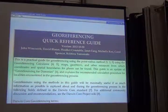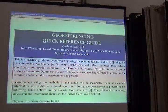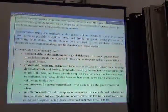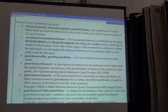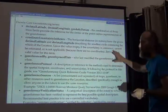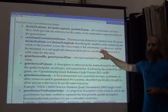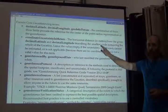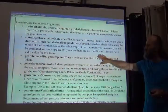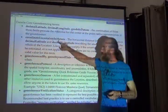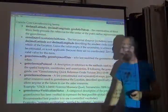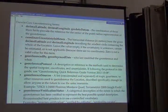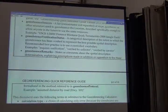One of the nice things about the guide, aside from being short, is that it defines all the terms you need to know right at the beginning of the document. We've been through all of these already — you can see they're all Darwin Core terms, and the guide describes them again in this place.